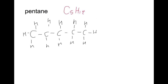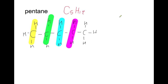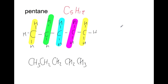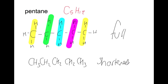For the shortened structural formula, we're going to take each section in turn and take out the bonds. So here we have a section that is CH3, then CH2, another CH2, another CH2, and finally a CH3. So this is your full structural formula, and this is the shortened version.